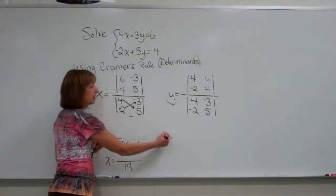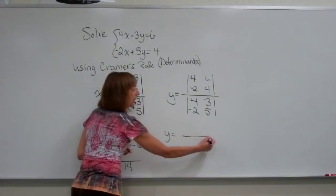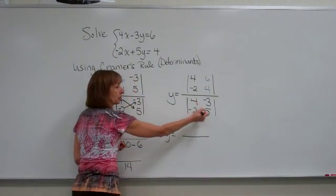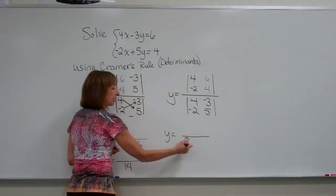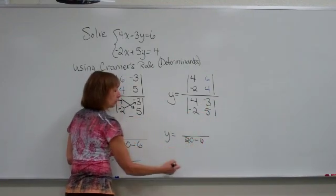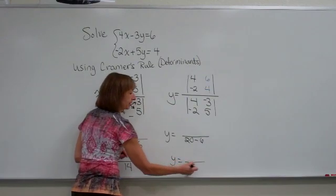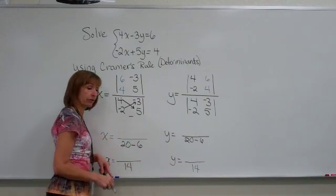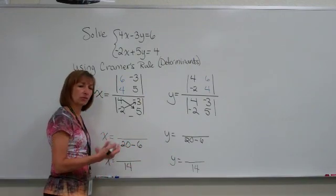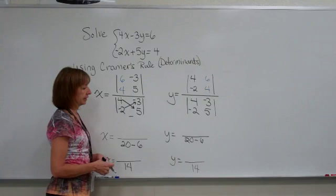Now that's also what we're going to get for the denominator for y. We'll just check it again, that gives me 20 minus 6, which gives me, again, a 14 in the denominator. They were the same, so we should get the same numbers in the denominators of our fractions, but it's always good to go through it again just to make sure.